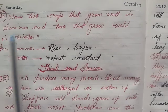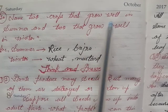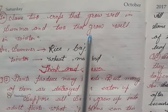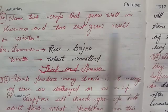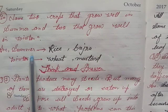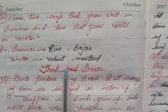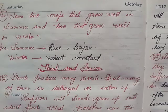Question 10 & 11: Name two crops that grow well in summer and two that grow well in winter. Summer crops: rice and bajra. Winter crops: wheat and mustard.